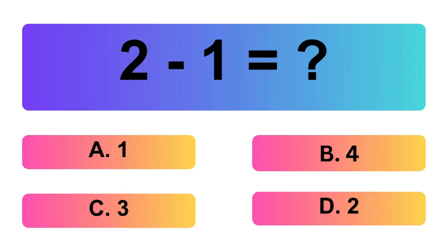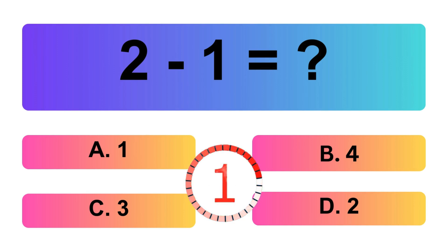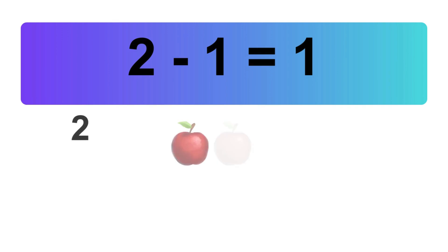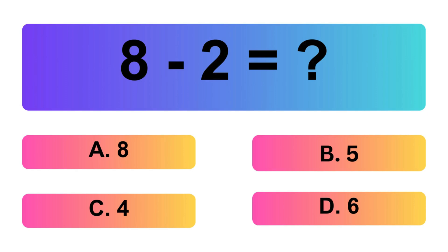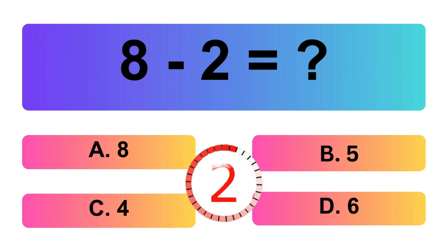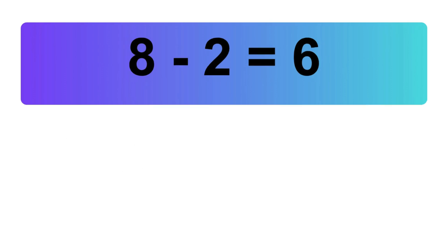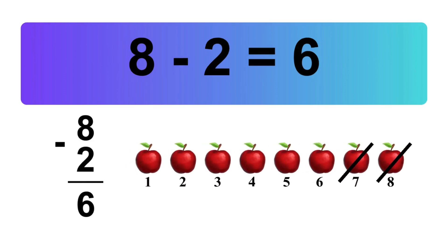2 minus 1 is equal what? Let's count it: 1. So, the answer is 2 minus 1 is 1. 8 minus 2 is equal what? Let's count it: 1, 2, 3, 4, 5, 6. So, the answer is 8 minus 2 is 6.